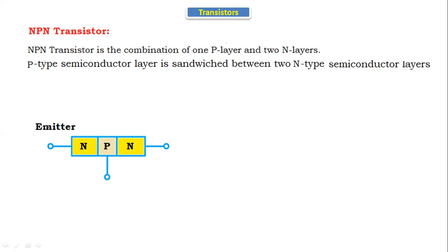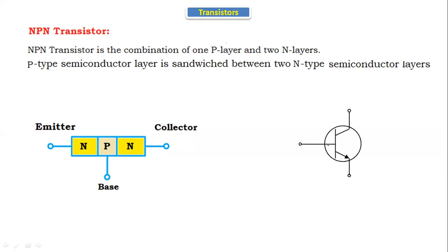The transistor has three terminals. This terminal is called the emitter terminal, this terminal is called the collector terminal, and the third is the base. If you see the symbol of the transistor, here this is the emitter terminal, this is the base terminal, and this is the collector terminal.